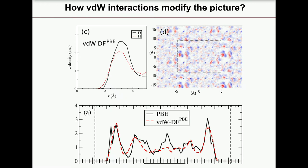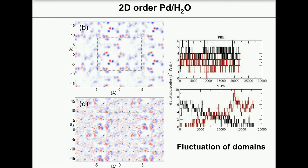However, the van der Waals interactions don't fundamentally change the structure. What is occurring is that both PBE and van der Waals simulations give the same types of structures, but the van der Waals one has very fluctuating domains. We don't have a unique type of structure forming at the interface — you have domains that interconvert from one another. The only difference is that without van der Waals the system is more stacked with smaller diffusivity, so we don't have time scales long enough to explore the motion between the two domains.